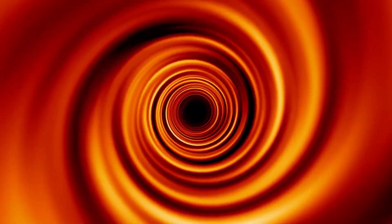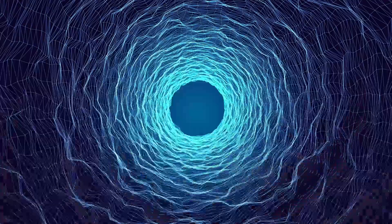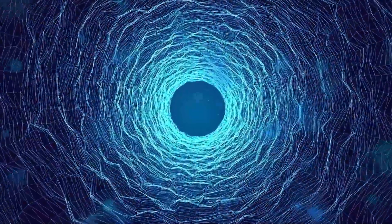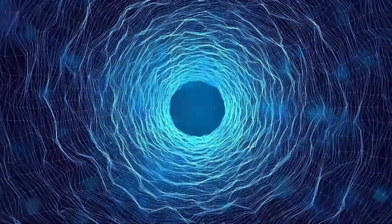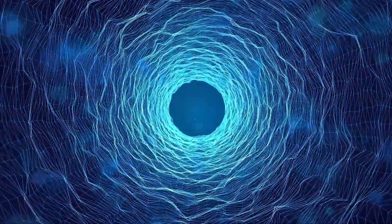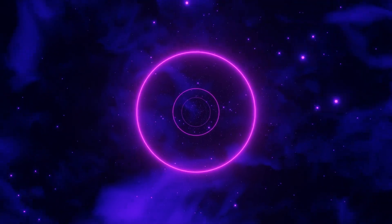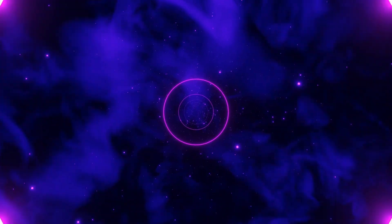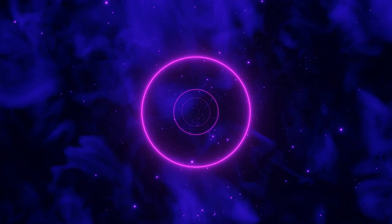Alternatively, some researchers believe that supermassive black holes could be the remnants of primordial black holes that formed in the early universe. These ancient black holes could have formed from density fluctuations in the very fabric of space-time shortly after the Big Bang, potentially linking the formation of black holes to the earliest moments of the cosmos.